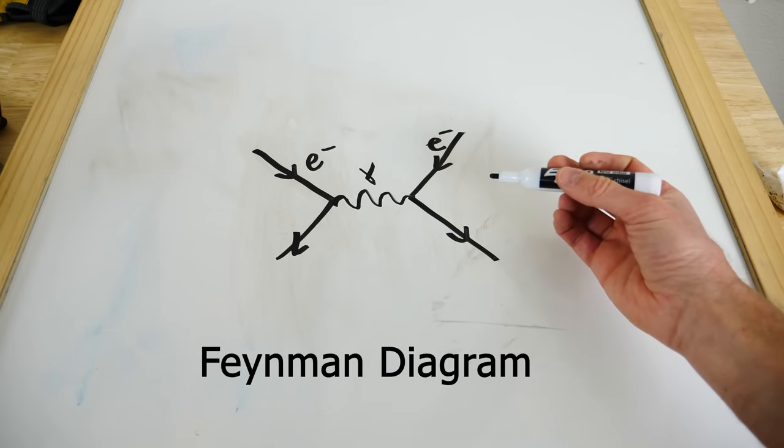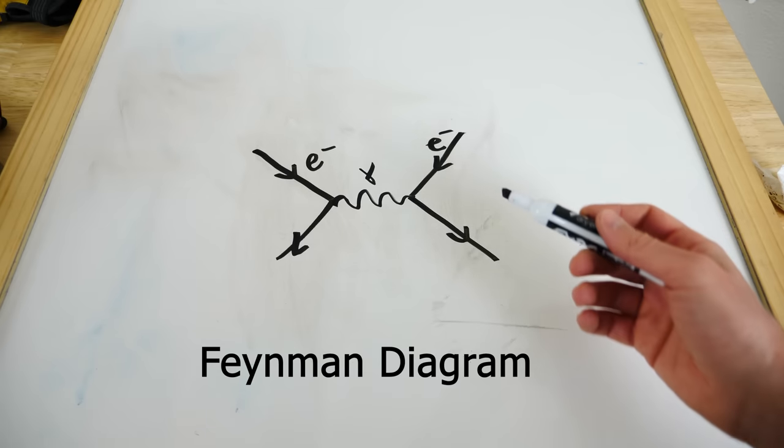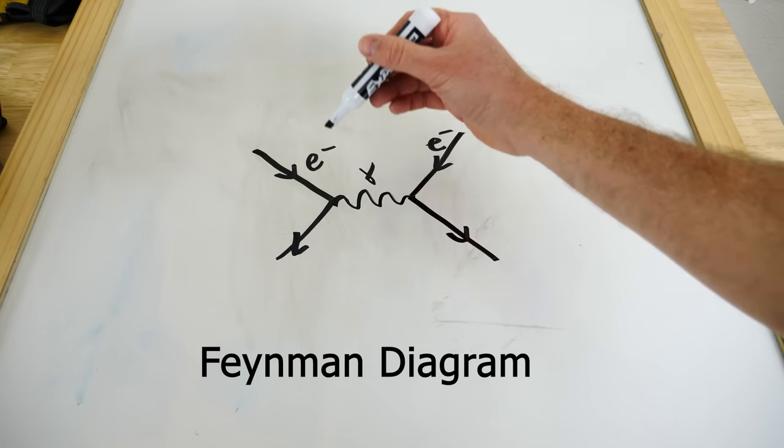Now what I just drew right here is called a Feynman diagram and it's a really easy way to describe particle interactions. So you can easily see and track each individual particle.